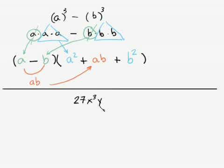27x cubed y to the 18th. Don't get freaked out. At least not yet. Minus 64p cubed q to the 24th. Okay, now you can freak out.